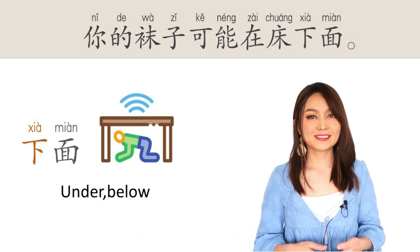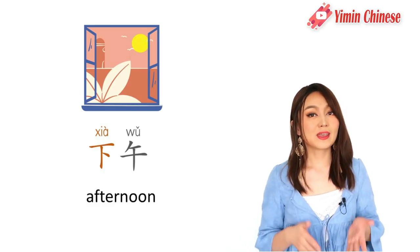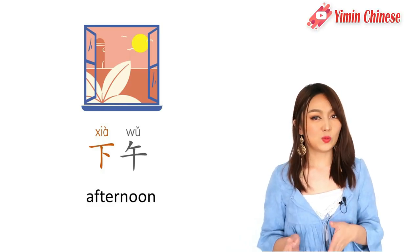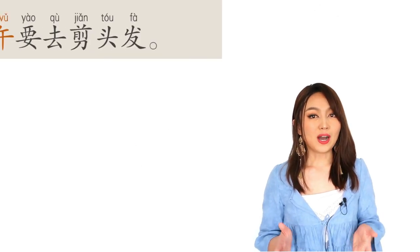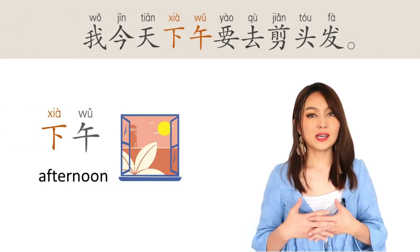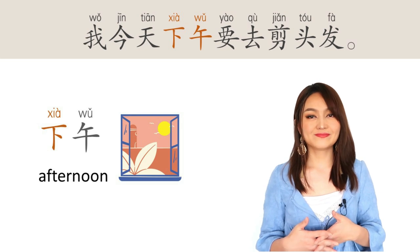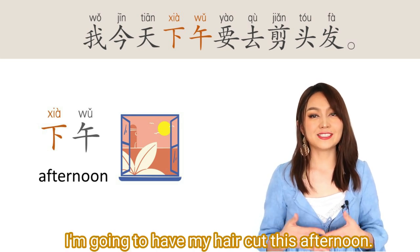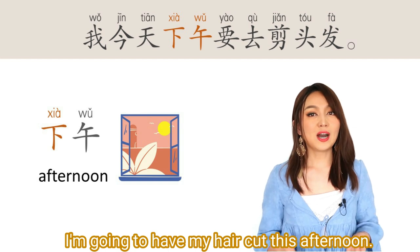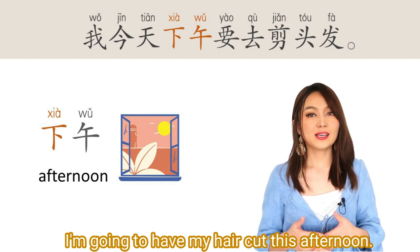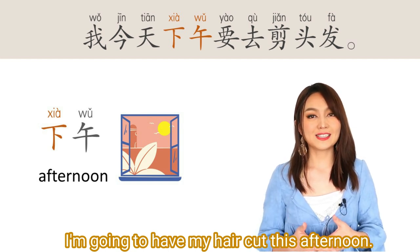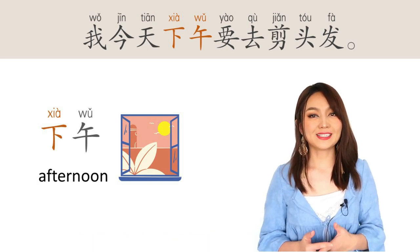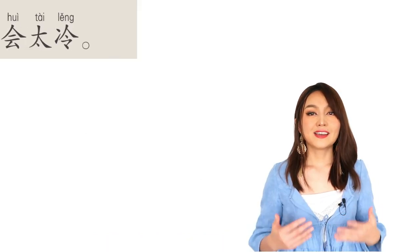下午 — afternoon. 下午. For example: 我今天下午要去剪头发. I'm going to have my hair cut this afternoon.